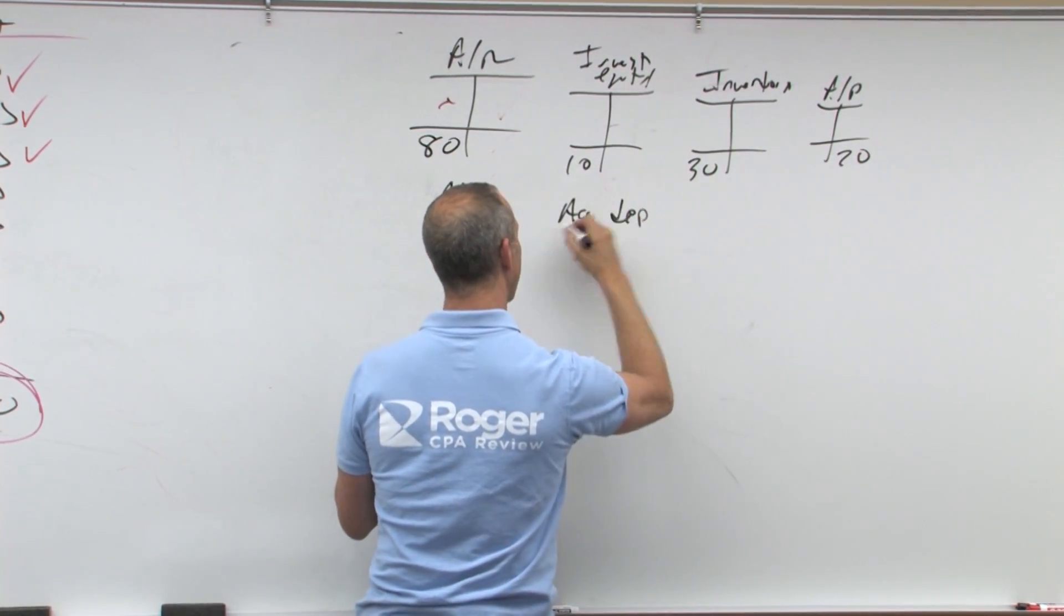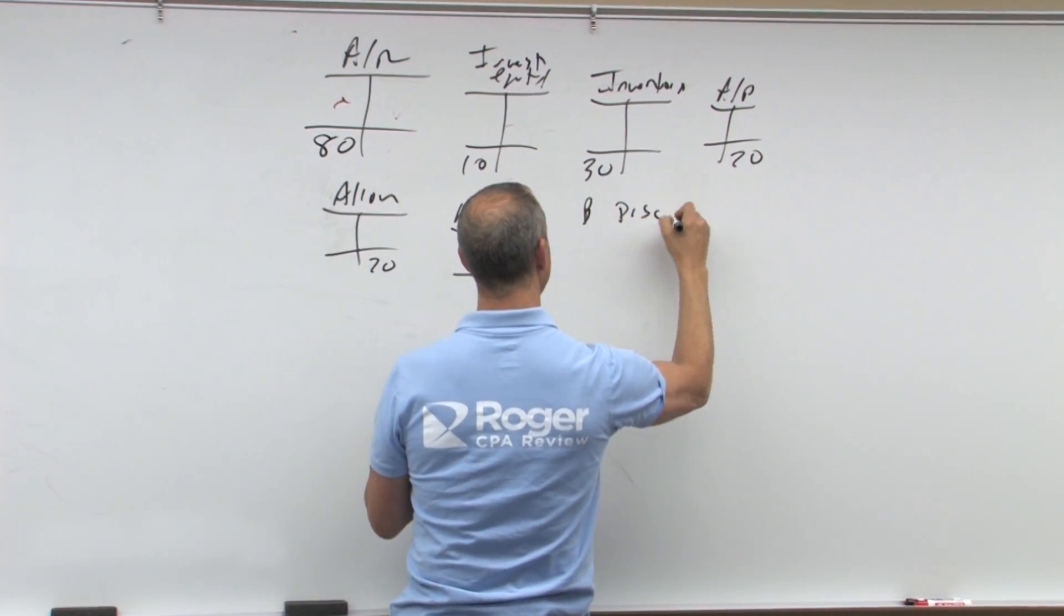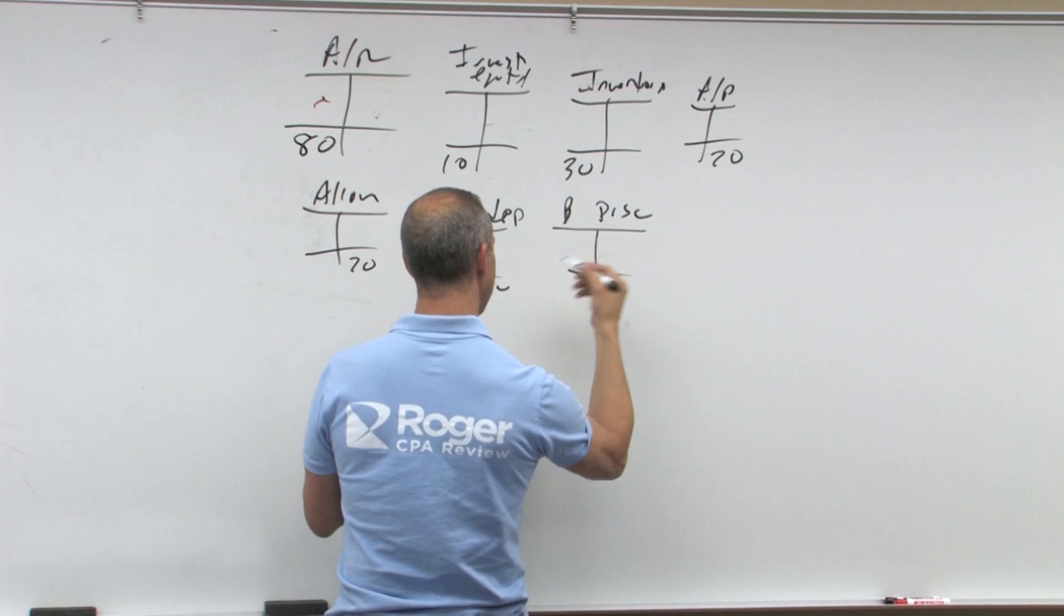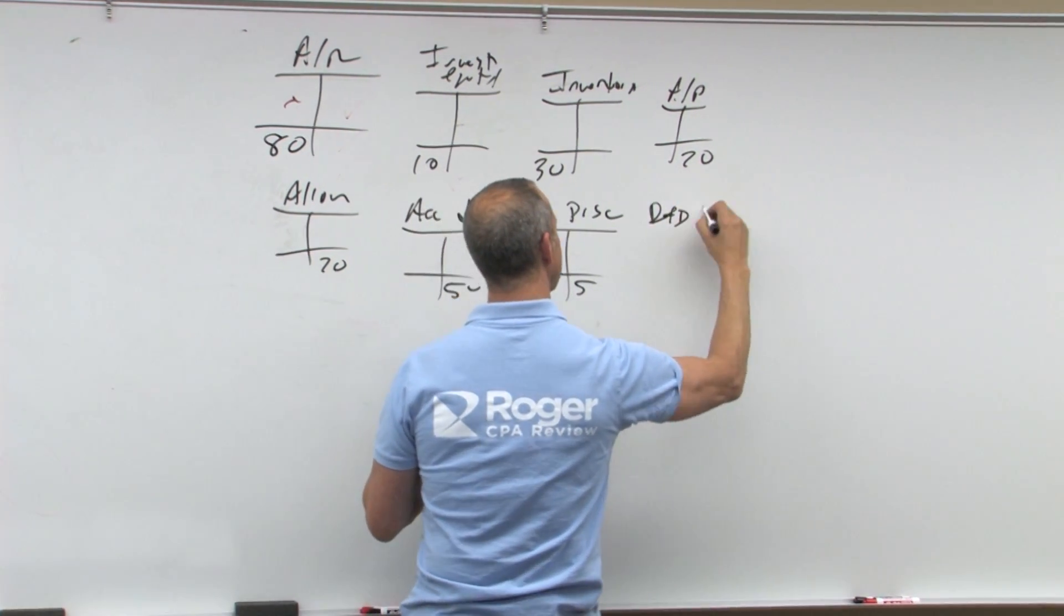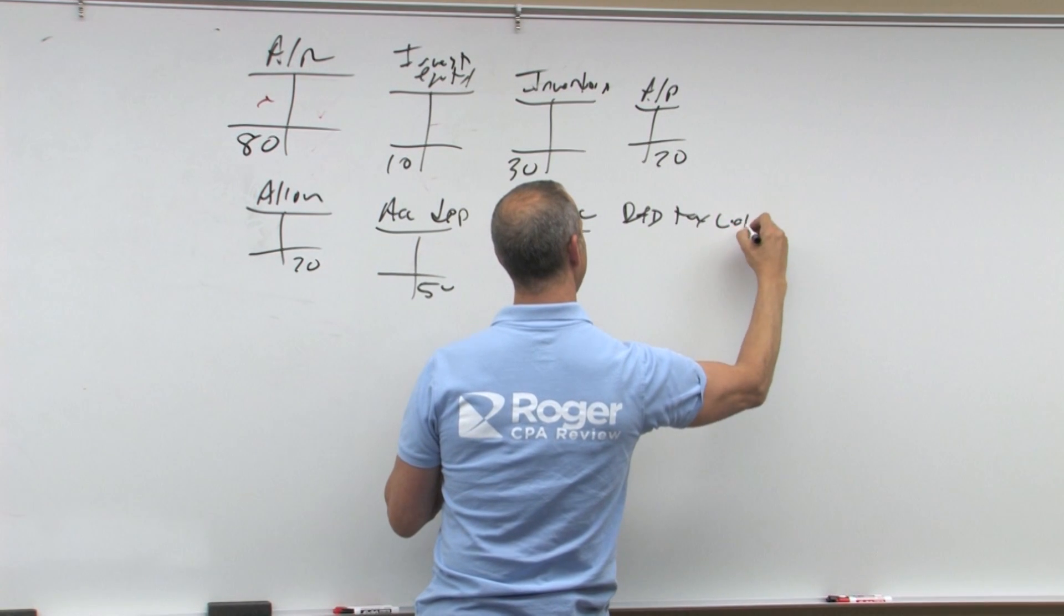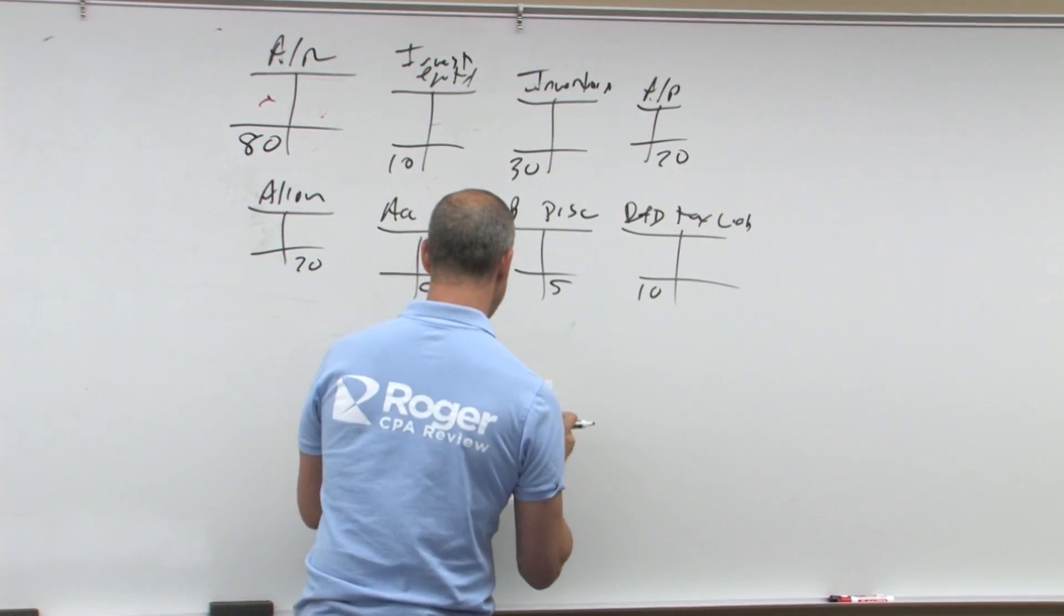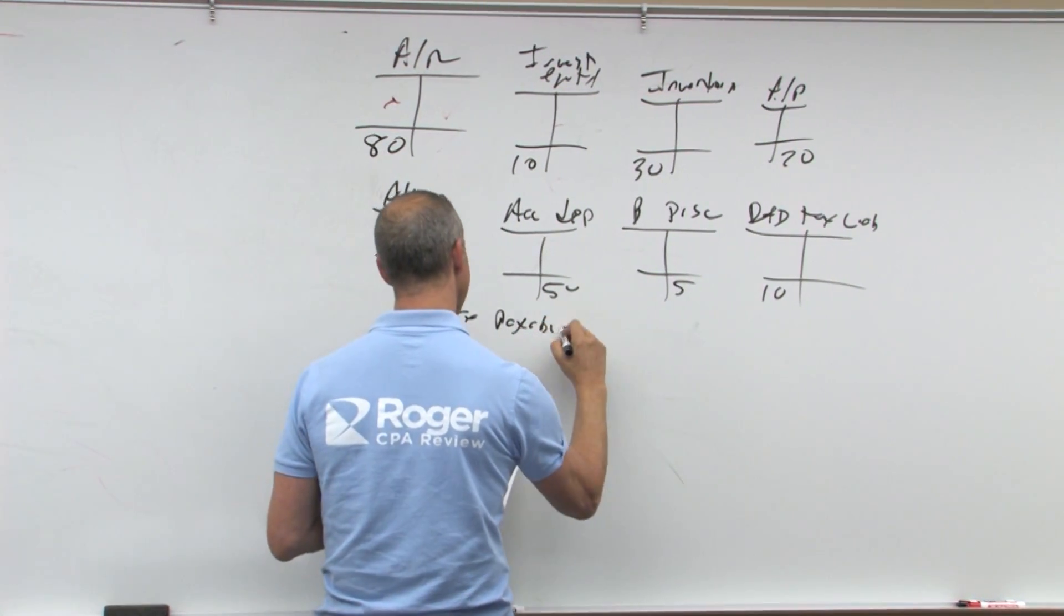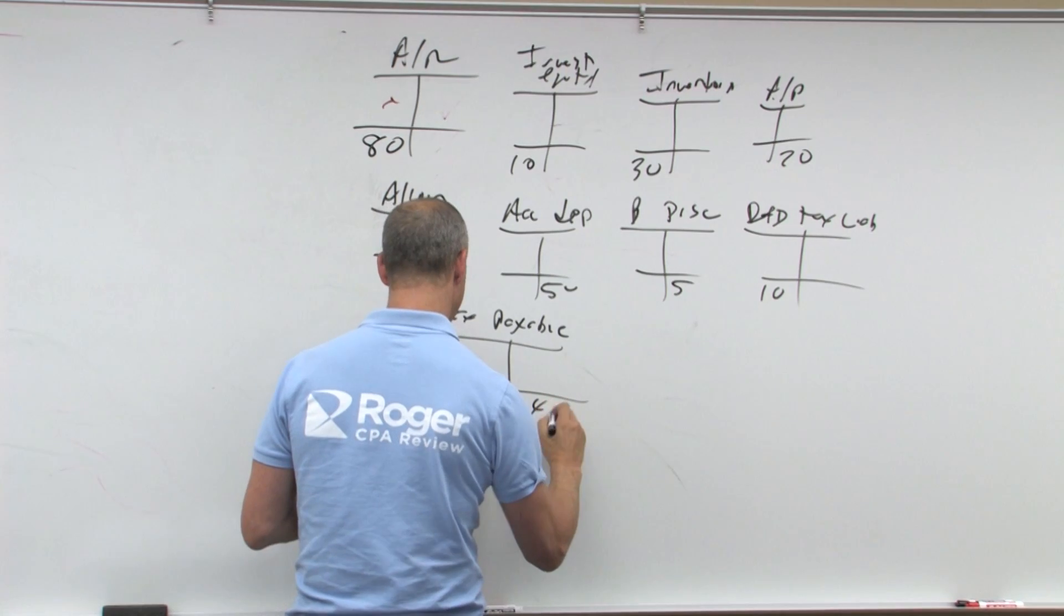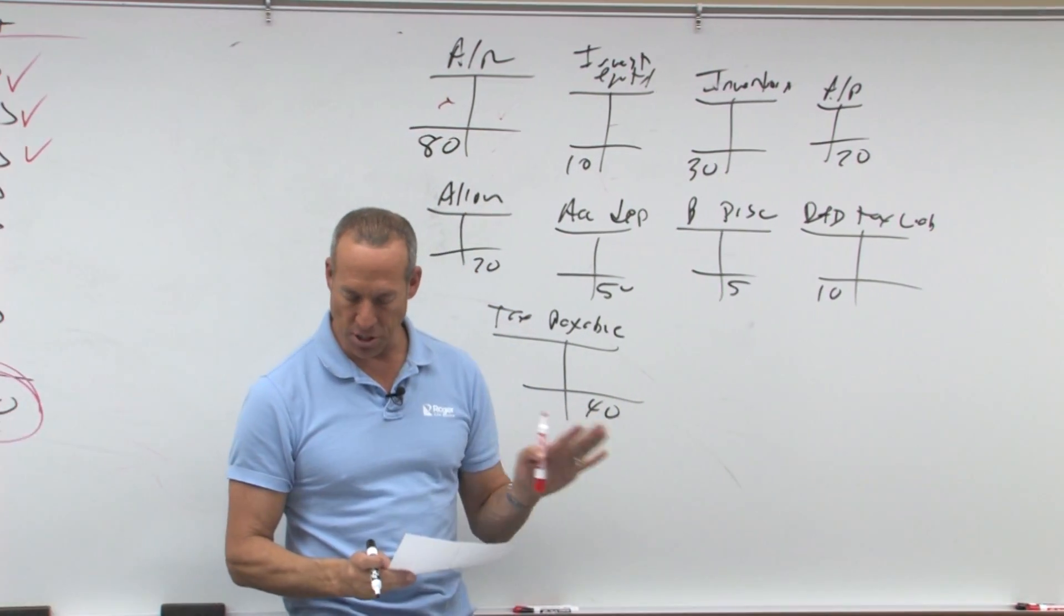Accumulated depreciation went up by 50. We've got bond discount that went down, which is normally a debit, so that would be a credit to decrease it. We have deferred tax liability, and that went down by 10. Then we have our tax payable, 40 went up.